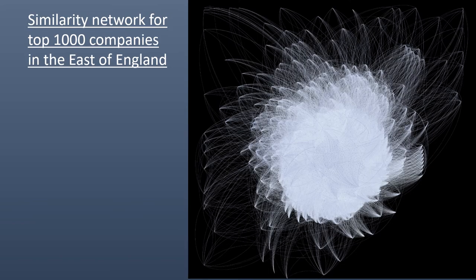Furthermore, we can even do more complex data visualization. This shows a similarity network which shows the interactions based on company similarities across the region. This is based on the top 1000 companies and it shows how similar they are — how you can be very focused towards the center for more similar companies. So you can use data to visualize and understand the region, and that's one of the aspects of the projects which we explore through the data projects.